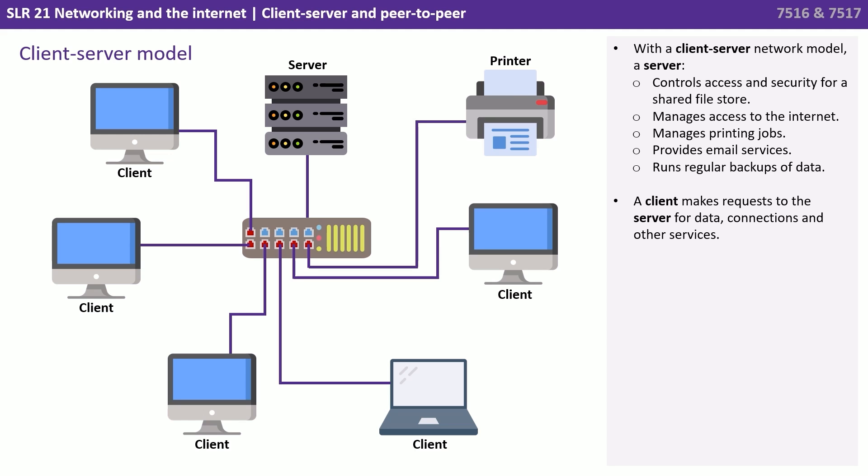With a client-server network model, a server controls access and security for a shared file store, manages access to the internet, manages printing jobs, provides email services, and runs regular backups of data. A client makes requests to the server for data, connections, and other services.